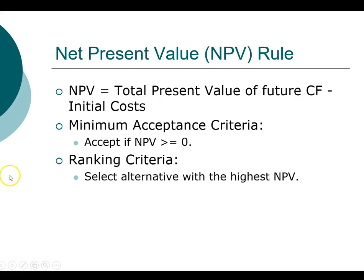For each criteria, we're going to learn a few things. First, we understand what the criteria is and the economic meanings and rationale behind it. We also want to know what the minimum acceptance criteria is, which will help us decide whether or not we should accept or reject a project. And for mutually exclusive projects, we will need to find a way to rank the projects, so we'll also talk about the ranking criteria.